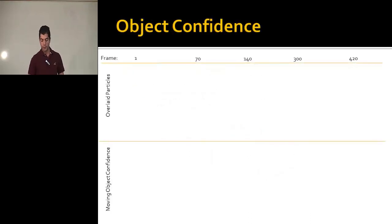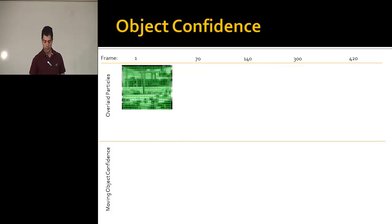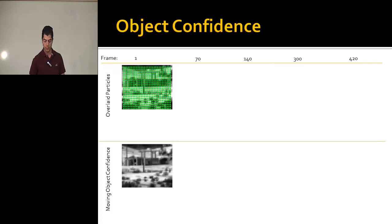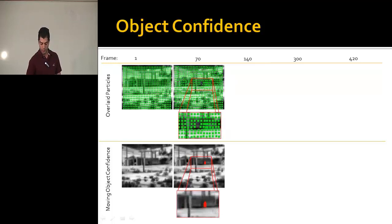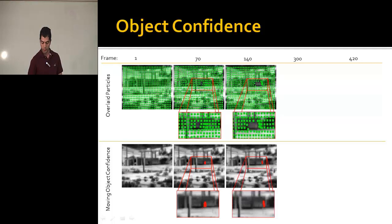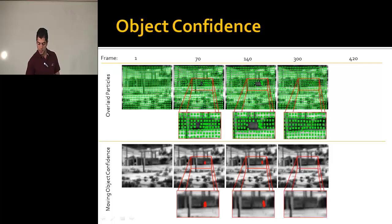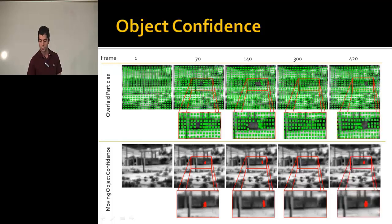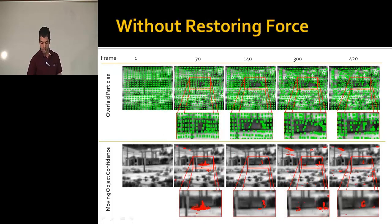This shows the object confidence we obtain. In the initial frame, particles are at their original location and the confidence map is empty. At frame 70, the object starts moving and we catch a blob corresponding to it. At frame 140, it continues moving and we continue tracking it. Then it disappears and particles return to their original location, allowing us to catch it again when it reappears on the other side. Without the restoring force the result is noisy and particles cannot return to their original locations.